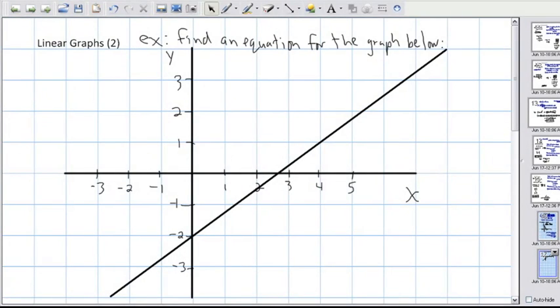In this example we're trying to work backwards from what we were just doing and this time we have a graph and we want to write out the equation for it. So in this case the question is find an equation for the graph below.